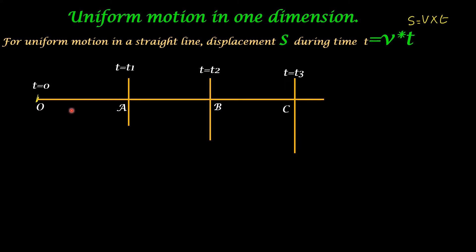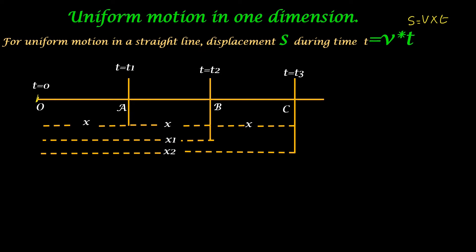An object moves from origin O to a point C along a straight line. Time taken to reach point A is t1 minus t0. Time taken to reach point B from A is t2 minus t1. Time taken to reach C from B is t3 minus t2. The distances OA, AB, and BC are all equal, marked as x. And t1 minus t0 equals t2 minus t1 equals t3 minus t2 — the time intervals for covering equal distances are also the same.